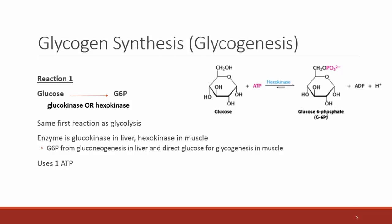Now let's talk about glycogenesis. We have individual glucose molecules in our hepatocytes or in our bloodstream, and our body says we've got extra right now, so let's store some — let's build glycogen. In the first step of the process, glucose is converted to glucose-6-phosphate by either glucokinase in the liver or hexokinase in the muscle. Both are kinases, so that makes sense — we're adding a phosphate group on.